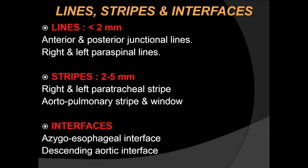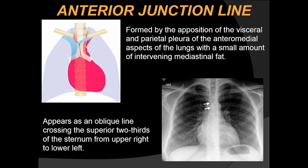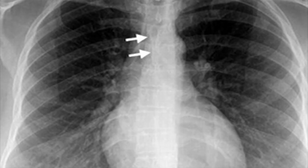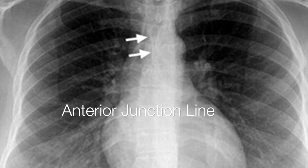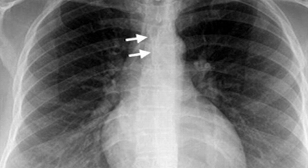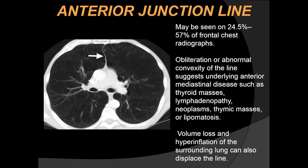When it is obvious there is no doubt, but when there are subtle signs we must be very careful not to miss them, so that we can carry out a CT for further investigation. The anterior junctional line is formed by the apposition of the visceral and parietal pleura — the anterior medial aspect of the lung with a small amount of intervening mediastinal fat. It appears as an oblique line crossing the superior two-thirds of the sternum from upper right to lower left. This is also seen on CT scan.